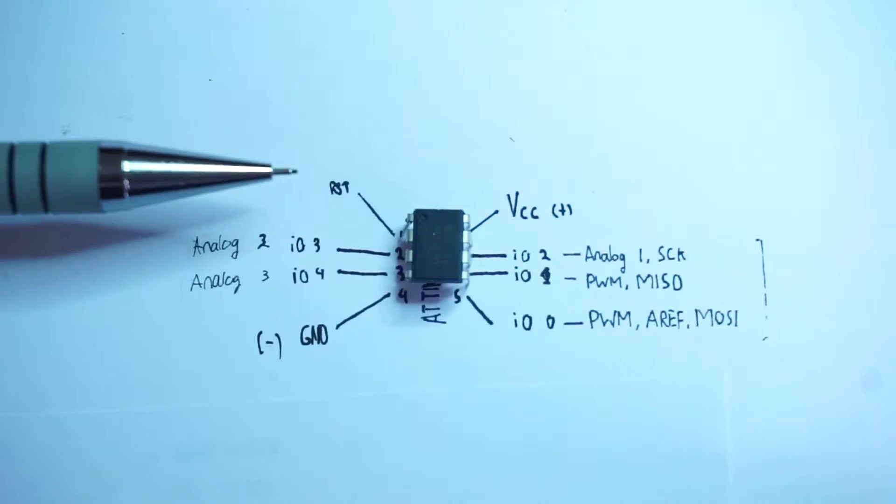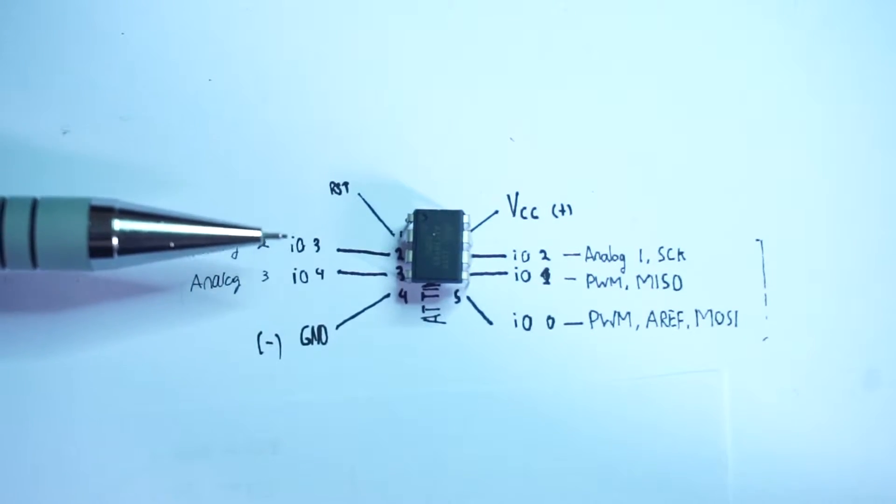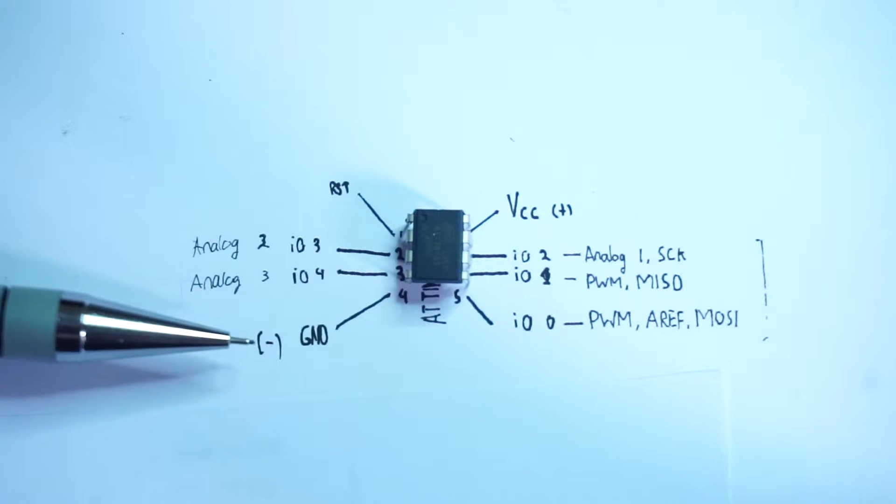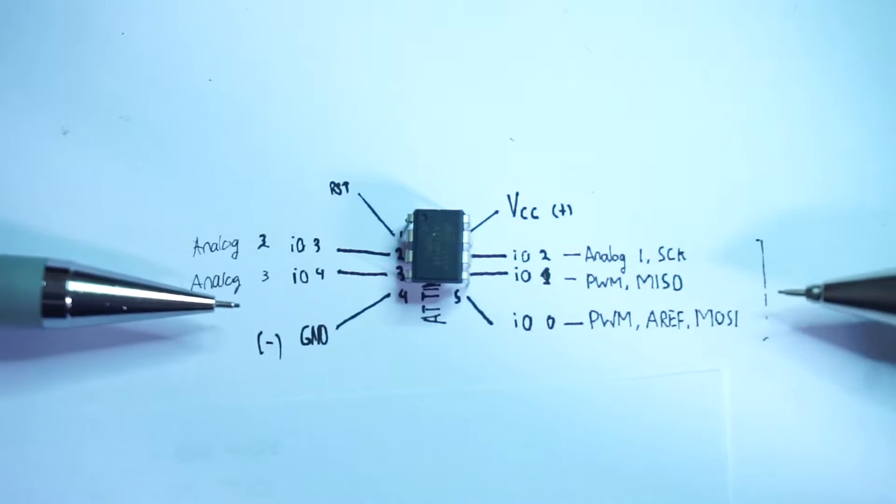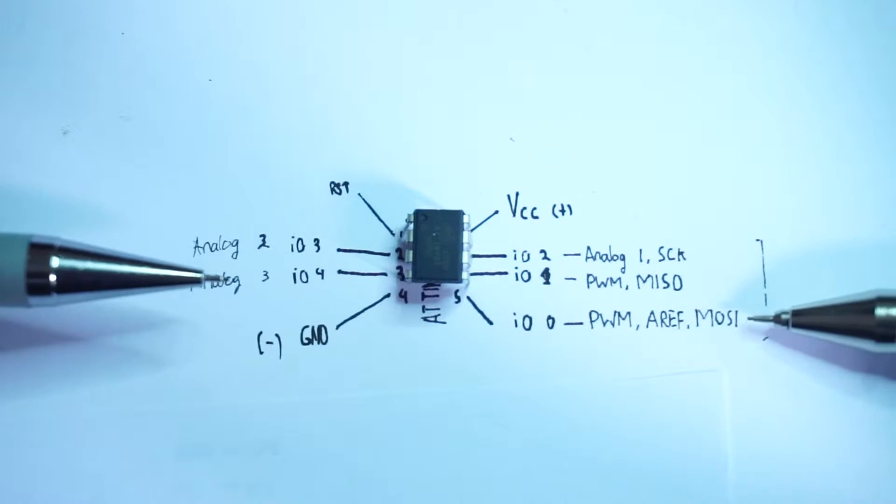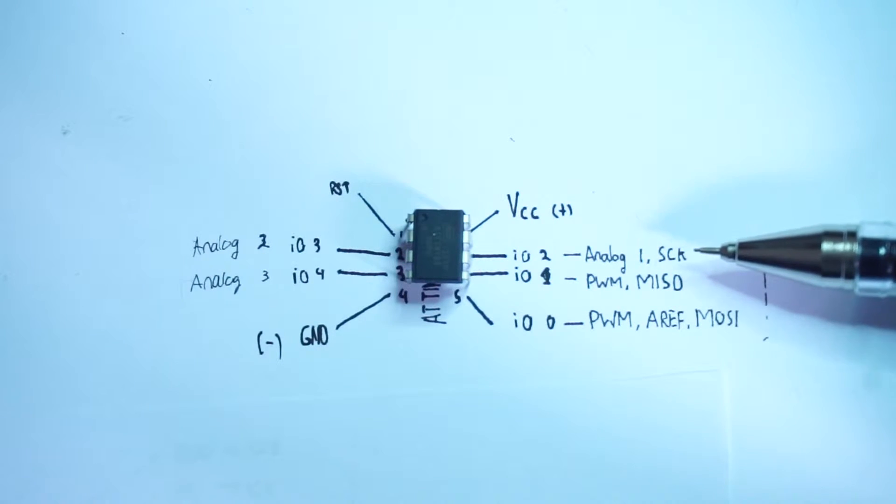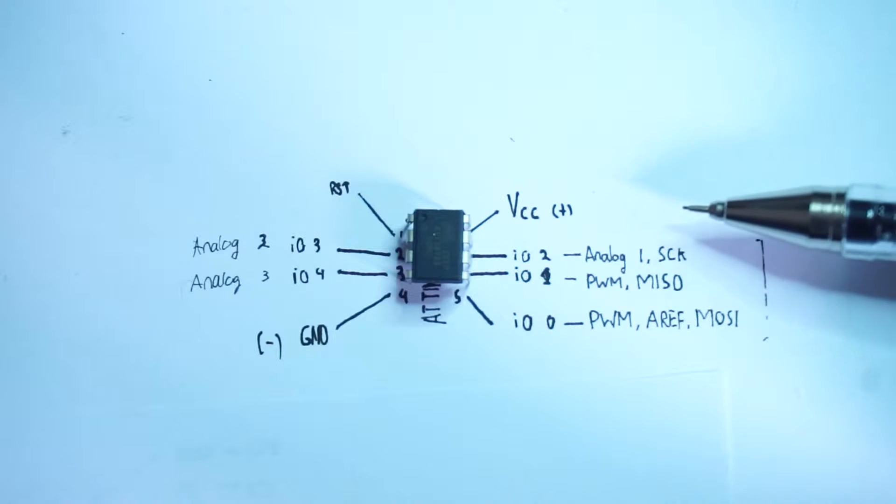So first, the ATtiny. The ATtiny has 8 pins: pin 1 is reset, pin 2 is analog 2 IO3, pin 3 is analog 3 IO4, pin 4 is ground. Pin 5 is digital 0 IO0 IRF and MOSI, pin 6 is digital 1 IO1 MISO, pin 7 is analog 1 IO2 SCK pin, and last pin 8 is VCC.